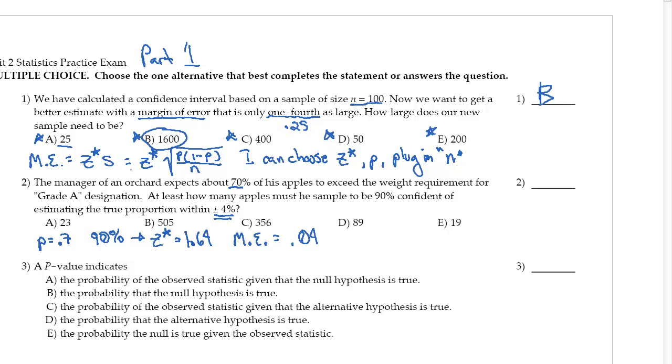So again, I'm just going to have my z star. Z star is 1.64. And here, I know that my proportion is 0.7. So I have 0.7 times 1 minus 0.7 here. And now what I need are ends to plug in here. I just need to start plugging in these ends to figure out which one is going to be the best.